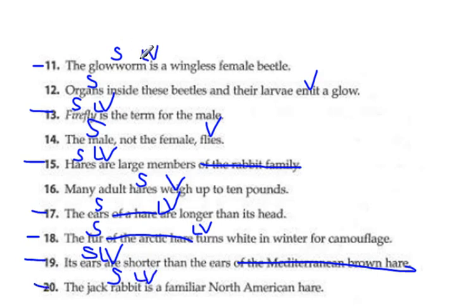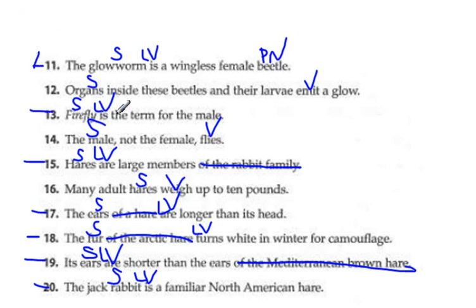So number 11, the glowworm is what? It is a beetle, which is a predicate noun. It's not just wingless — it's a wingless female beetle. 'Wingless' and 'female' are ordinary adjectives describing that beetle; they're not predicate adjectives going back to describe the subject. They're describing 'beetle,' so that's a predicate noun. 13, 'firefly' is the term — that's your predicate noun. 15, hares are what? They are large members. 'Members' is a predicate noun; 'large' is a regular adjective describing those members.